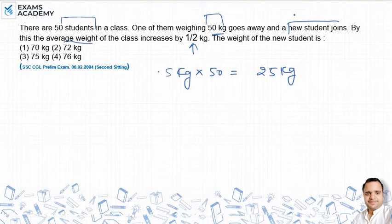So if we add this difference to the old student's weight, we get the new student's weight. Option 3 is 75 kg. This is the answer.